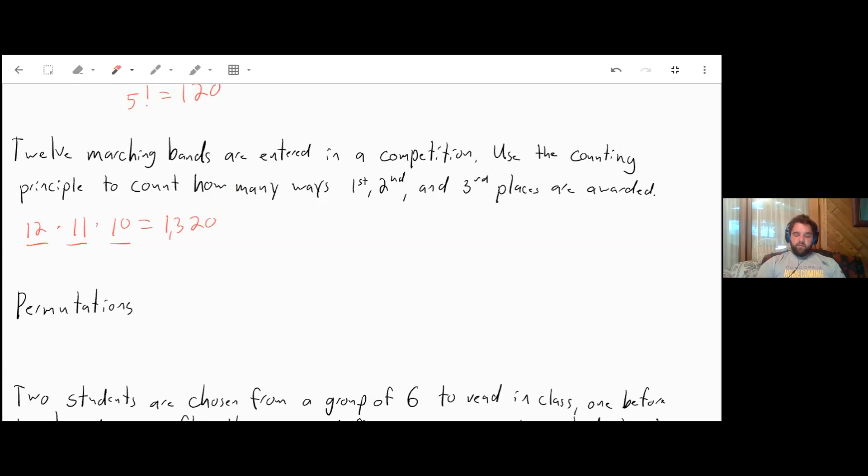Now this is actually a good permutation problem. What a permutation says is if we have a total of 12 bands, we're going to find the permutation or the number of ways that we can have three results. And so we'd write this as 12P3. In the book they write this as nPr. So n is the number of total things that you're choosing from, and r is the number of things that you're choosing.